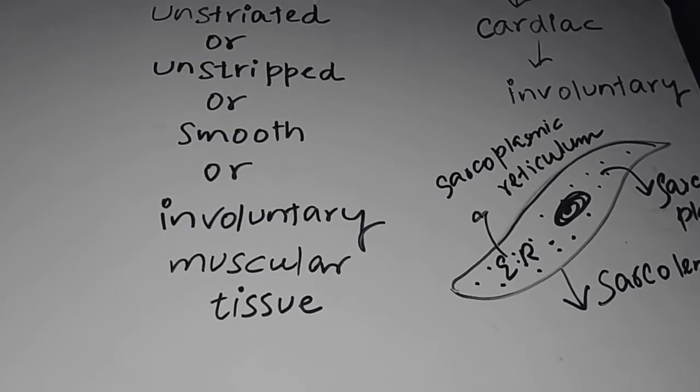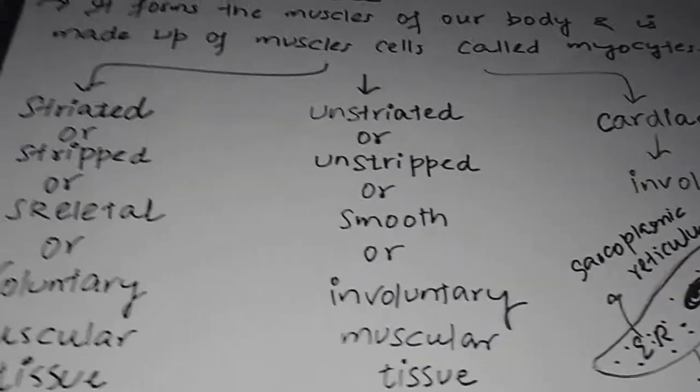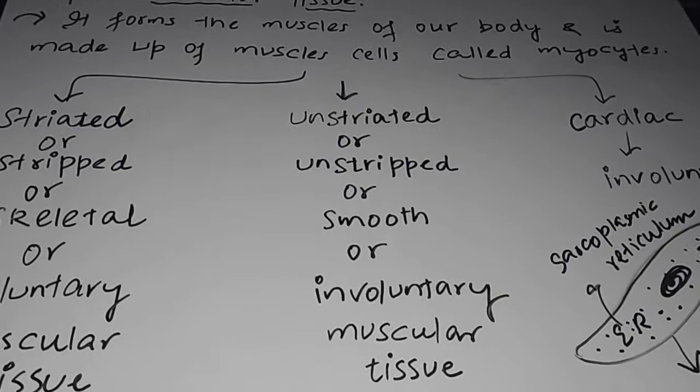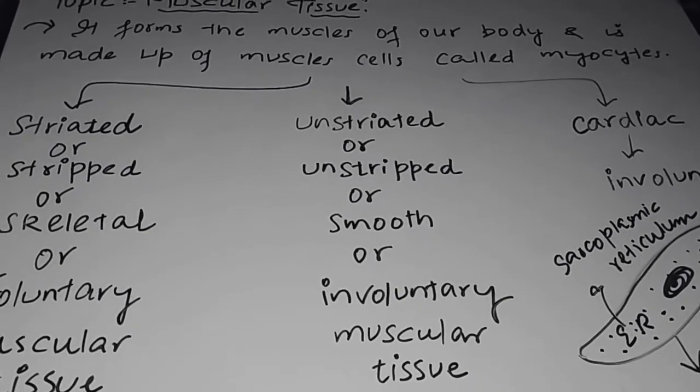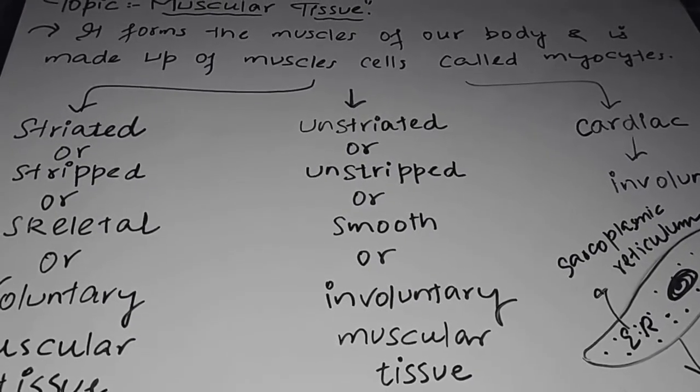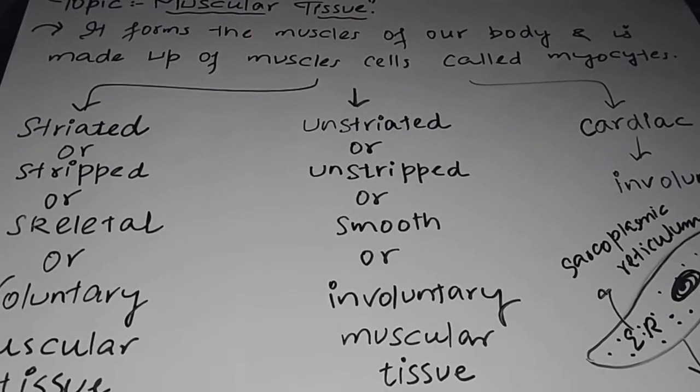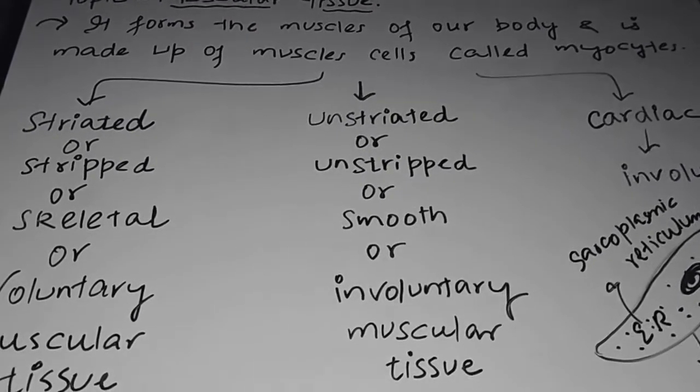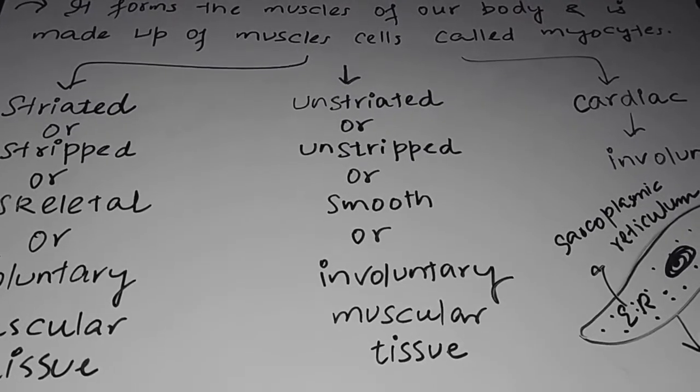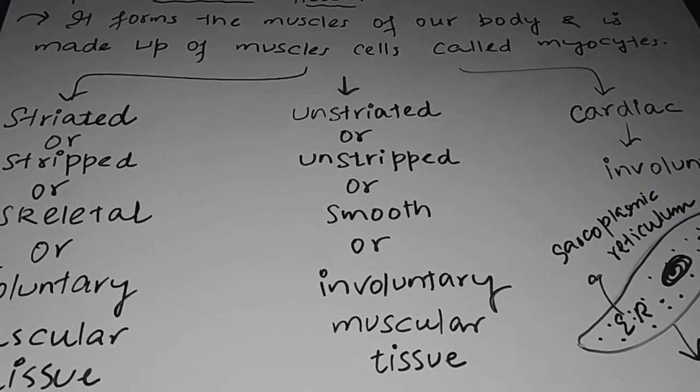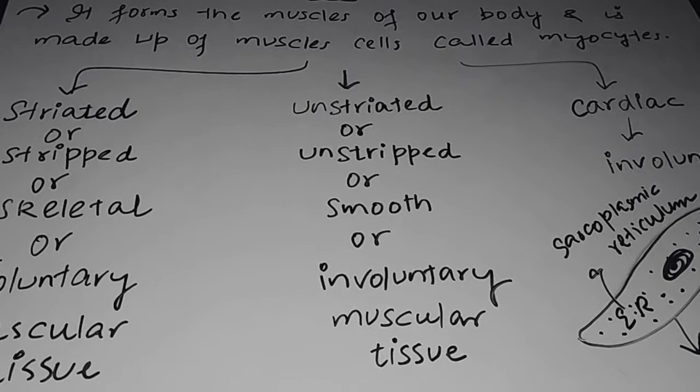Now if I talk of the main function of muscular tissue, it is contractility or contraction. The main working of muscle cells is to contract. So it's because of contraction, different movements in our body take place. For example, the food we swallow is because of contraction of the muscles of esophagus or food pipe.